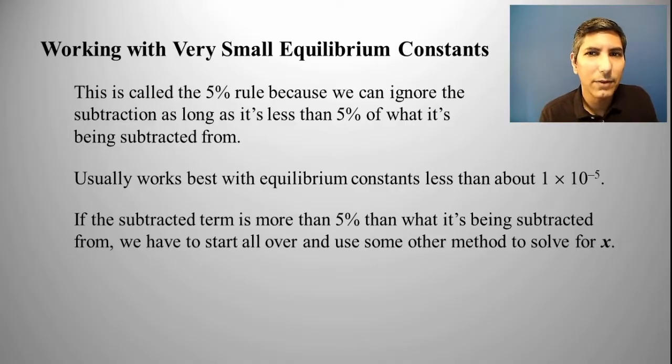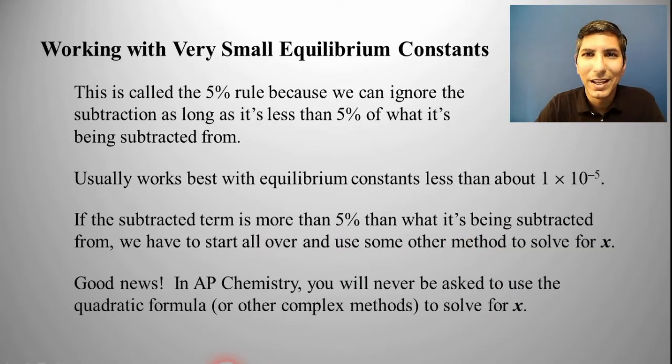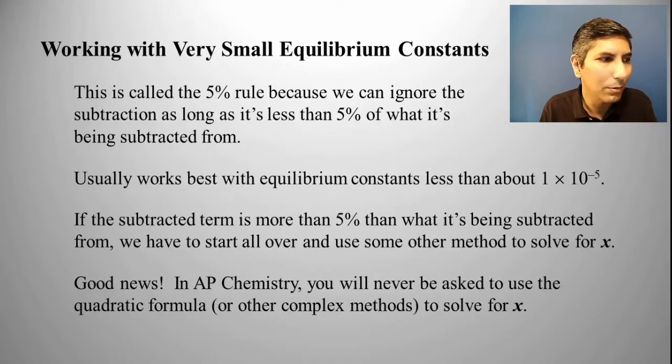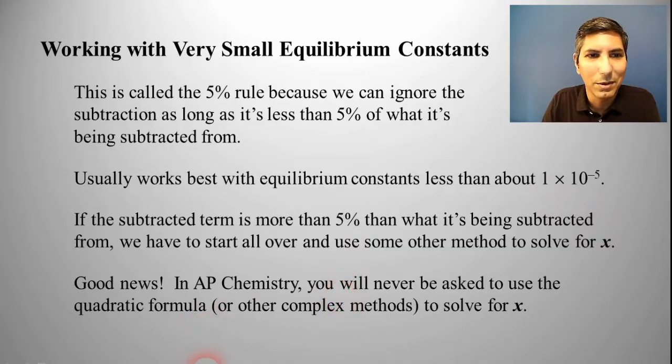This works usually best for significantly small equilibrium constants. In general chemistry in college, sometimes they will have you actually have values greater than 5% in which you'll have to use some other complex mathematical method to solve for X. But I do have some good news. If you're taking this class as an AP course in high school, you are never going to be asked to use the quadratic formula or some other complex method like cubic roots or quartic roots to solve for X. The 5% rule is going to work as long as you have that small equilibrium constant.